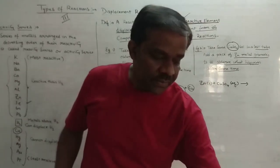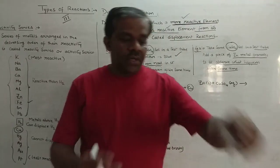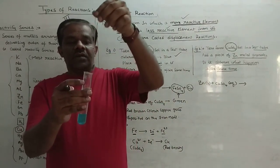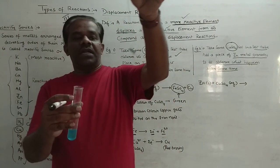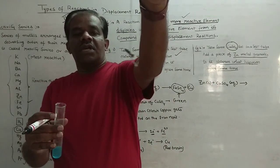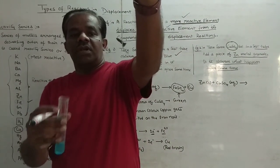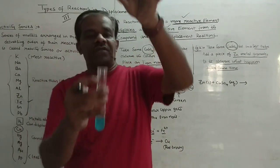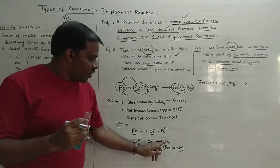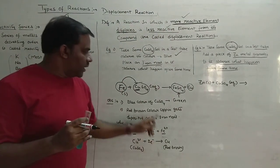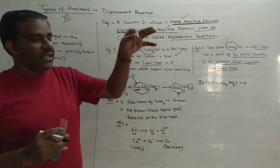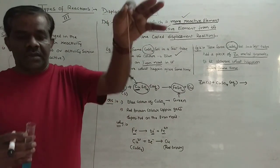Let us see the observation. You can see very clearly that the iron nail has turned reddish-brown in color. This is because of the deposition of copper on the nail. You can clearly see the reddish-brown color of the nail.